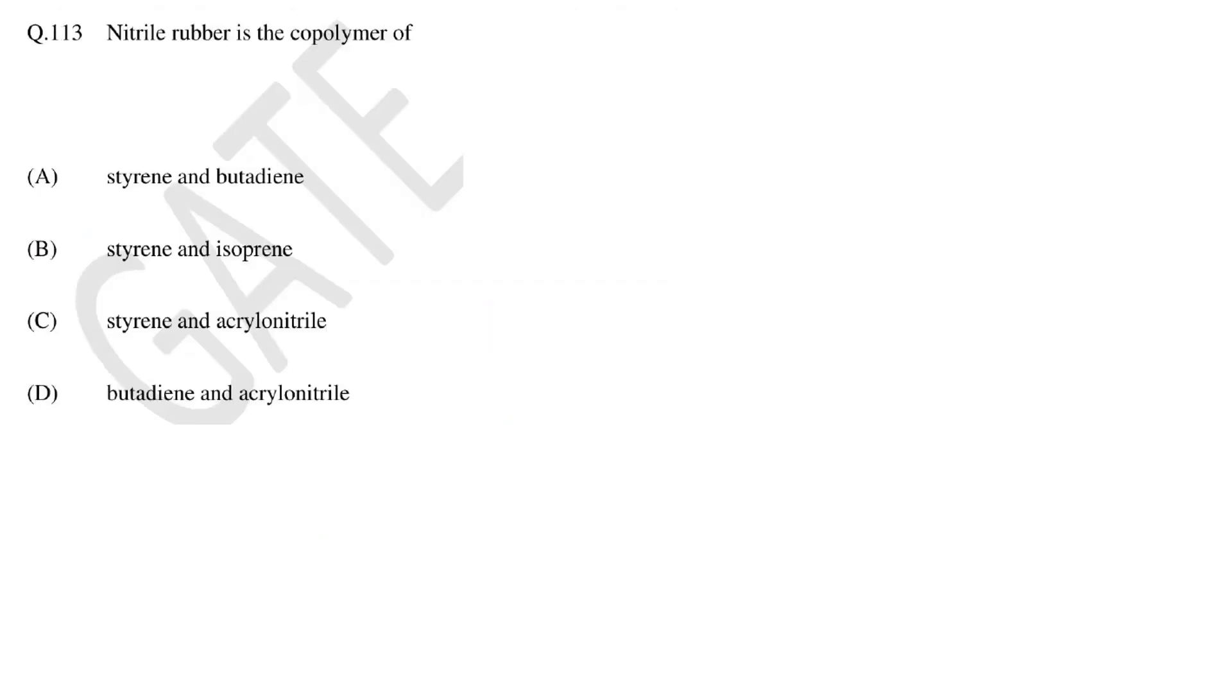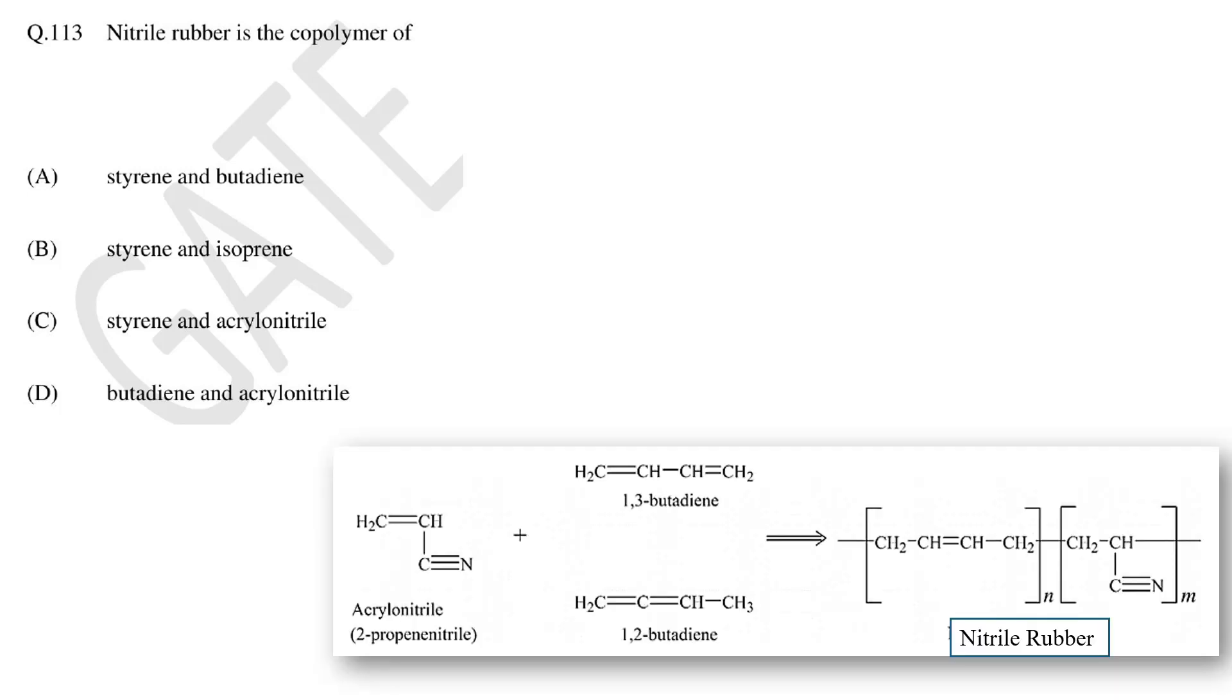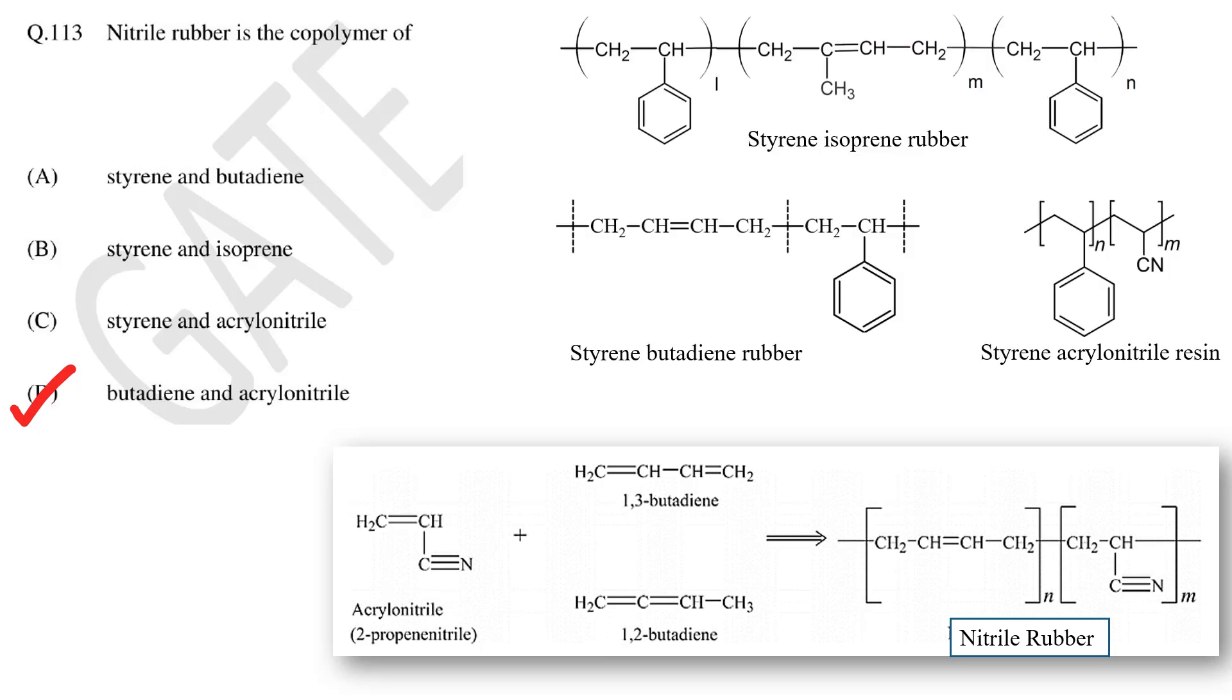In this question identify the nitrile rubber monomer. Nitrile rubber has many names as it is also known as nitrile butadiene rubber NBR, BUNA N and acrylobutadiene rubber. It is a synthetic rubber prepared from acrylonitrile and butadiene. So the correct answer is D. Option A, B and C are incorrect.